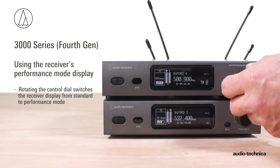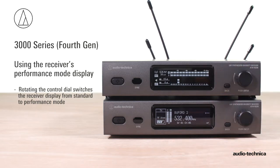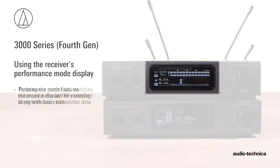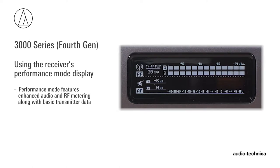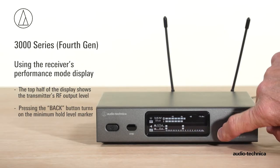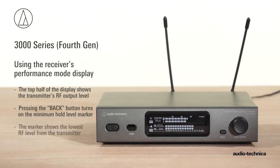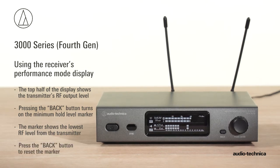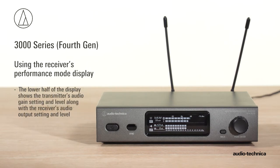Rotating the receiver's control dial switches the receiver display from standard mode to performance mode. Performance mode features enhanced audio and RF metering along with basic transmitter data. The top half of the display shows the transmitter's RF level. Pressing the back button turns on the minimum hold level marker — a useful troubleshooting tool that shows the lowest RF level from the transmitter and will not move if the RF level increases. Pressing the back button resets the marker.